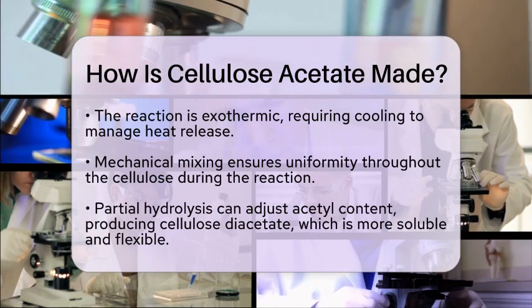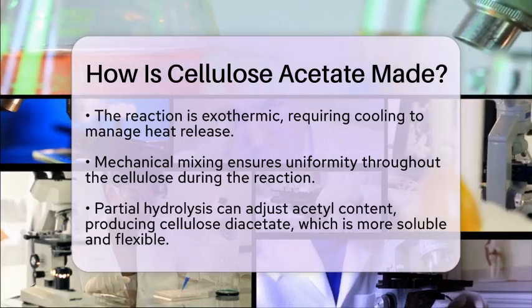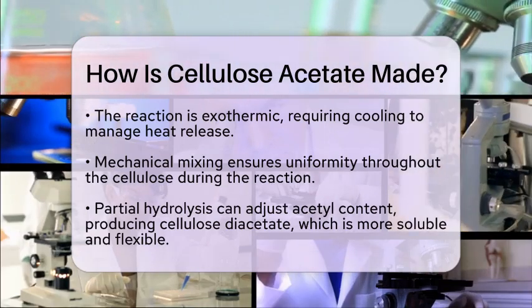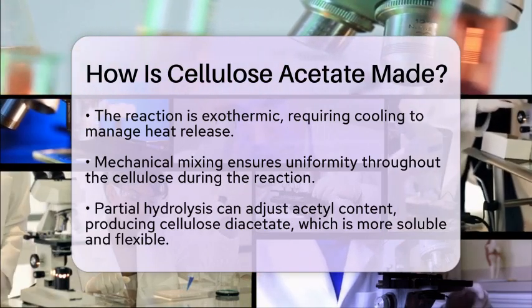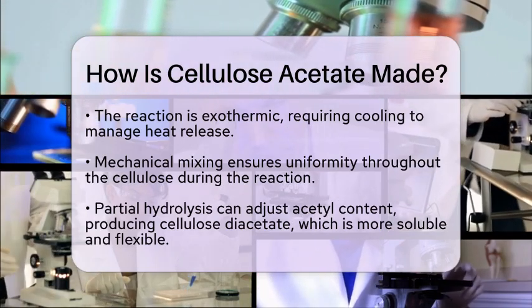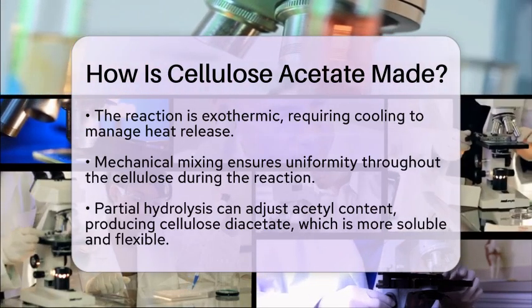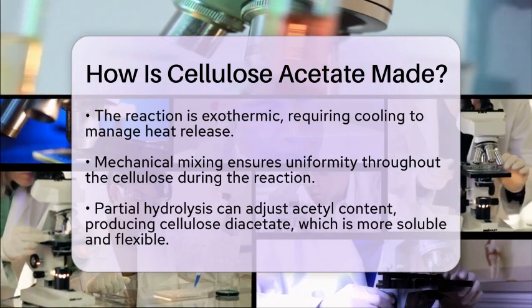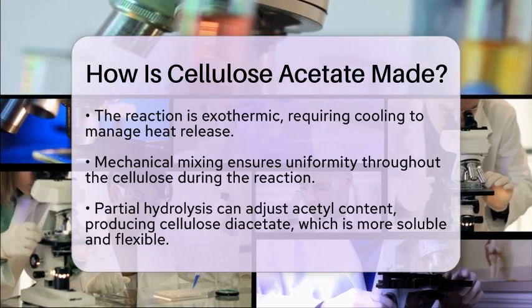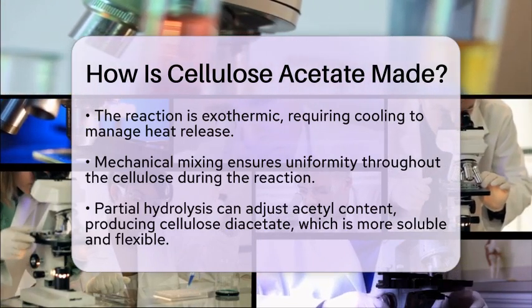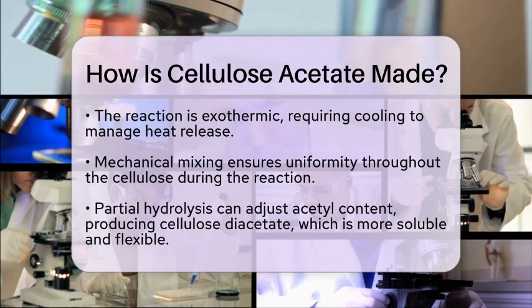The final step is drying. After washing, we dry the cellulose acetate to obtain a solid polymer product. This polymer can then be dissolved in solvents like acetone for fiber spinning or film casting, depending on its intended use.